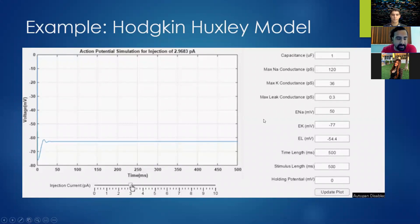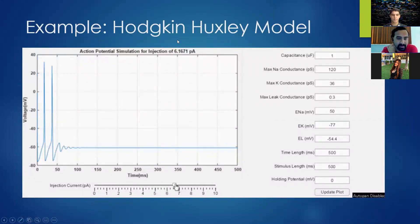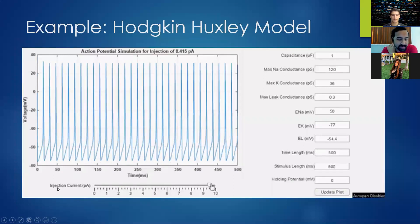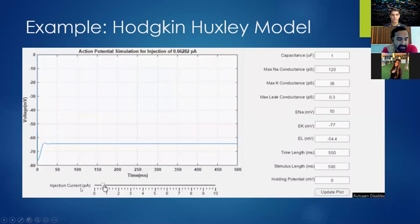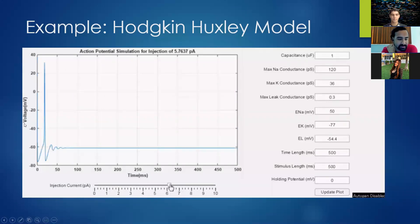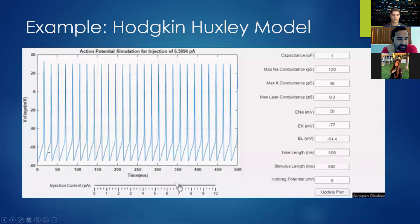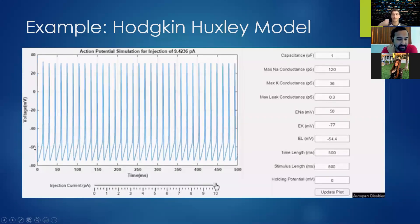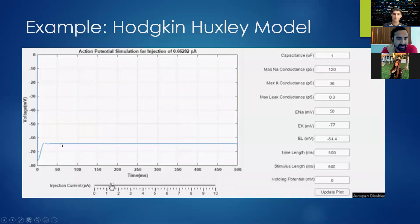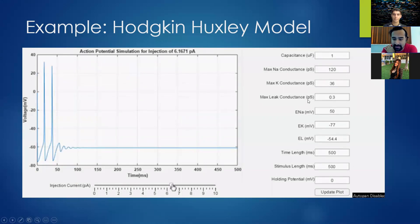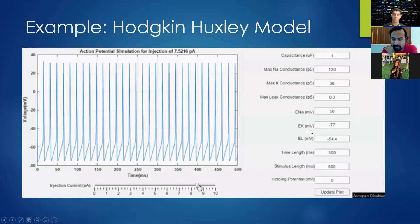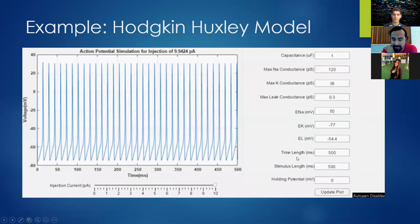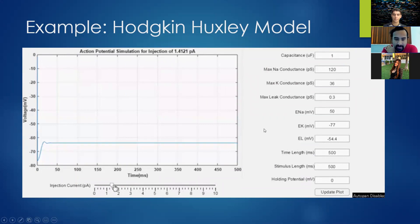Here's one I made for the BME 2740 course — an example of the Hodgkin-Huxley action potential. You can see how as you move the slider, you can change the injection current, and that results in a change in the voltage. Once you've passed a certain activation threshold, you see the cascade effect occur. You can change the capacitance of the cells, conductance, the reversal potential for each ion, the length of the simulation time, and more.